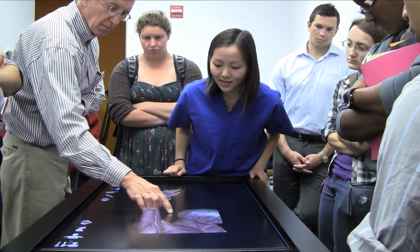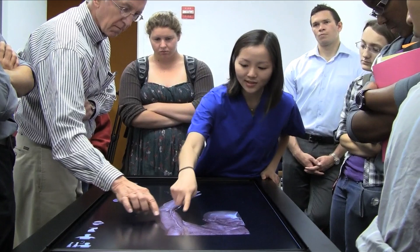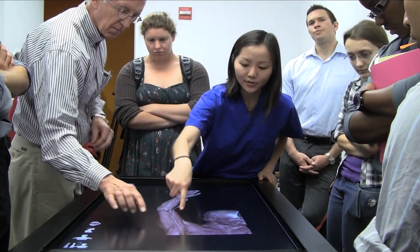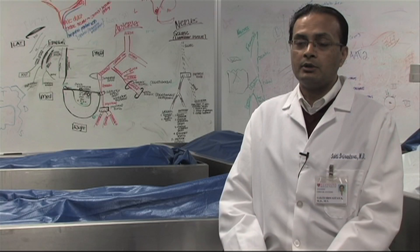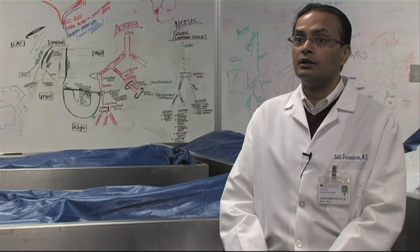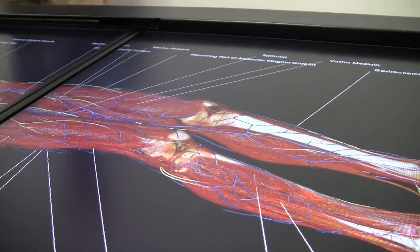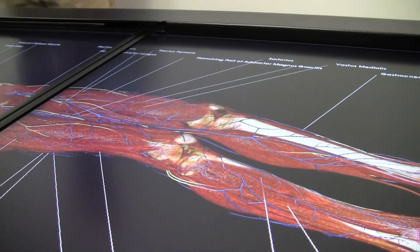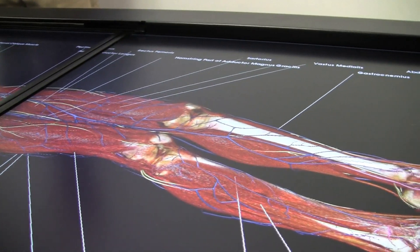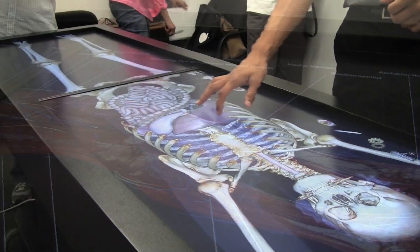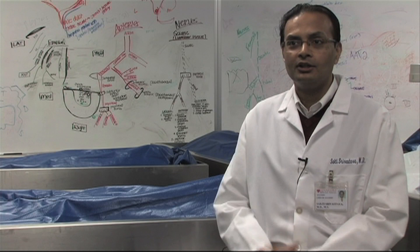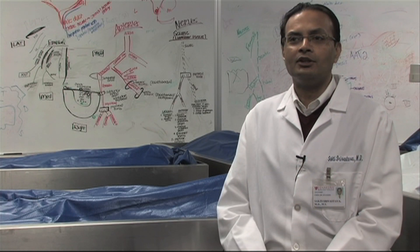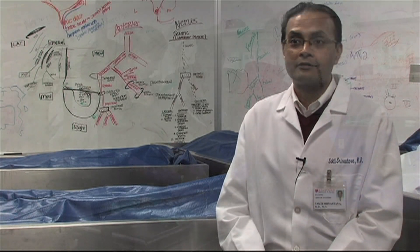It's a wonderful tool, I think, to highlight some of the things in anatomy that we don't usually see — such as being able to see the vessels, arteries, and veins with bones and have the muscles disappear, for example. Putting different structures in various combinations is something that doesn't happen with a normal cadaver.